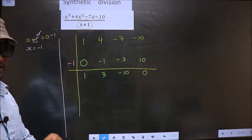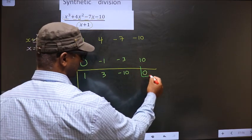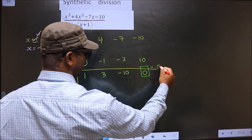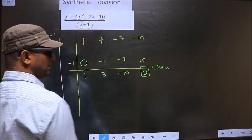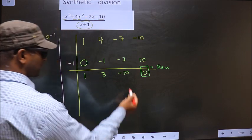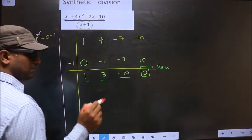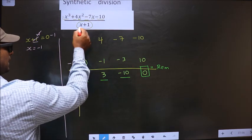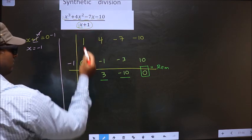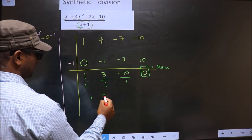Once you have done till here, then the last number will be your remainder. Always, last number will be your remainder. And before numbers, you should divide by x coefficient present in the denominator. So denominator x coefficient is 1. So you divide by 1, we get the same numbers.